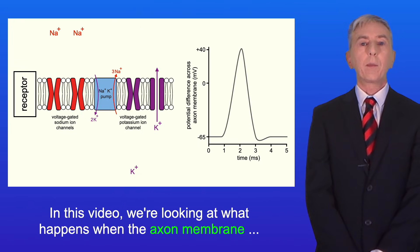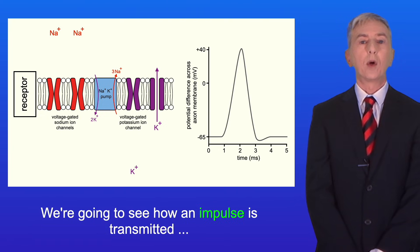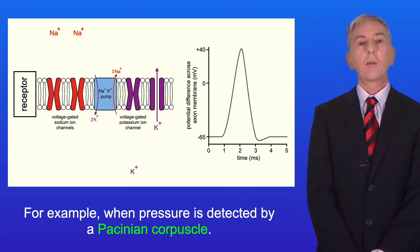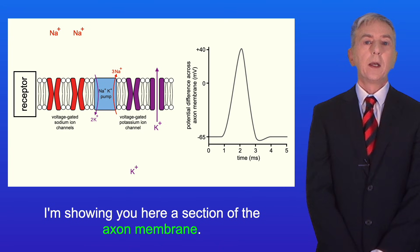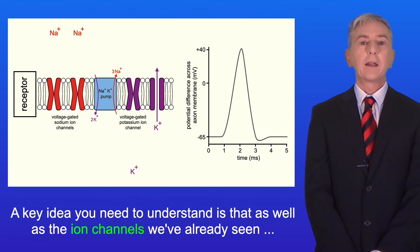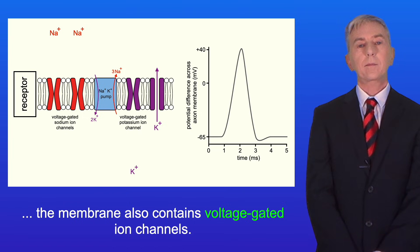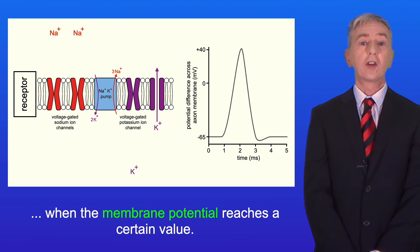In this video we're looking at what happens when the axon membrane transmits an impulse — how an impulse is transmitted in response to a stimulus being detected by a receptor, for example when pressure is detected by a Pacinian corpuscle. Here I'm showing you a section of the axon membrane and the potential difference across the membrane. A key idea is that as well as the ion channels we've already seen, the membrane also contains voltage-gated ion channels, which only open when the membrane potential reaches a certain value.